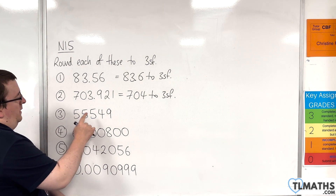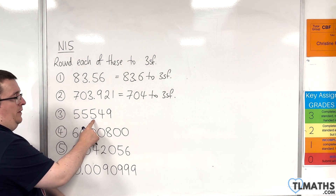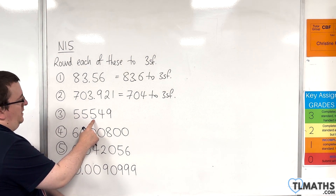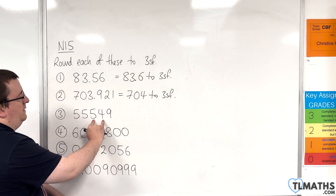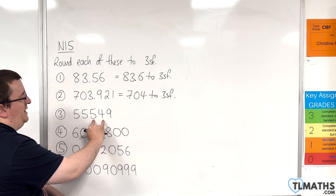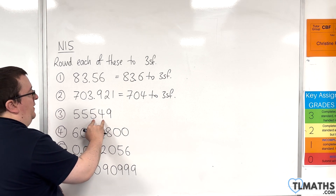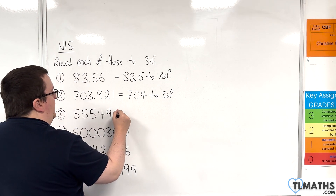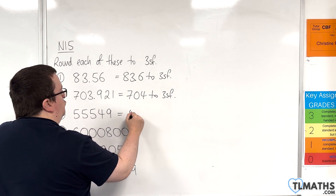Number three: here is the third significant figure. To the right is the fourth, so we round down. So this is 55,500.